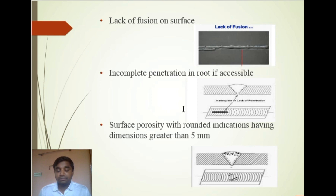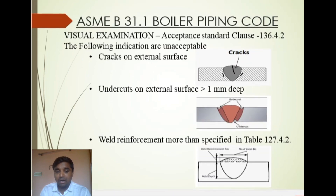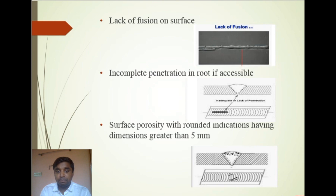Surface porosity with a rounded indication having any dimension greater than 5 mm is also not acceptable. If you check the weld surface and find any dimension greater than 5 mm, it is unacceptable. So for visual examination, the unacceptable defects are: cracks, undercut, weld reinforcement exceeding limits, lack of fusion, incomplete penetration, and surface porosity.